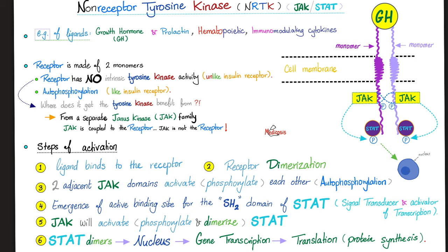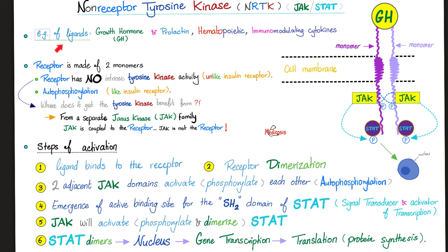The story of non-receptor tyrosine kinase is straightforward. The ligands include growth hormone, prolactin, hematopoietic cytokines, and immunomodulating cytokines. This receptor is made of two monomers and has no intrinsic tyrosine kinase activity — unlike the insulin receptor, which was a strong independent woman. It still has autophosphorylation, but the tyrosine kinase activity comes from outside. Let me introduce Mr. Janus Kinase, or the JAK family. JAK is coupled to the receptor, but JAK is a separate entity from the receptor itself.